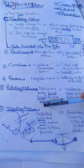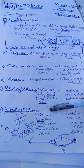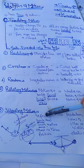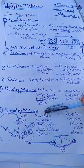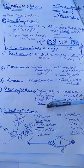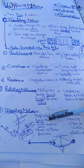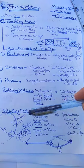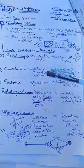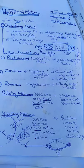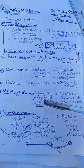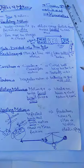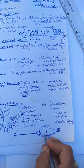Vibratory motion is that type of motion in which a body repeats its motion - back and forth motion, up and down motion, left and right motion about its mean position. The body keeps returning to the same mean position. This type of repeated motion we call vibratory motion. For example, we take a pendulum.